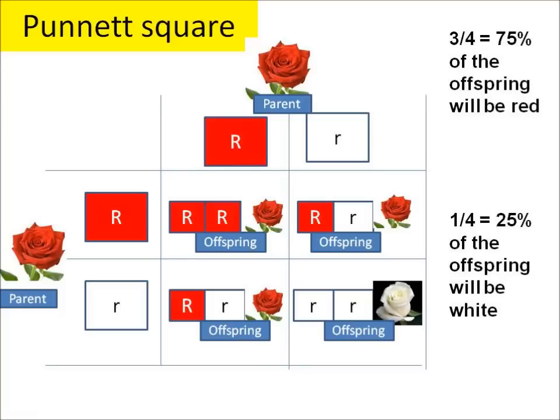And one out of four offspring will be little r little r and so will be white. So overall, three out of four will be red and one out of four will be white.